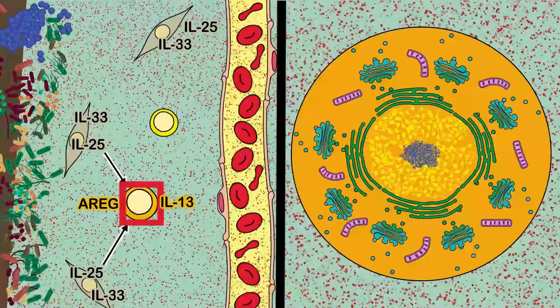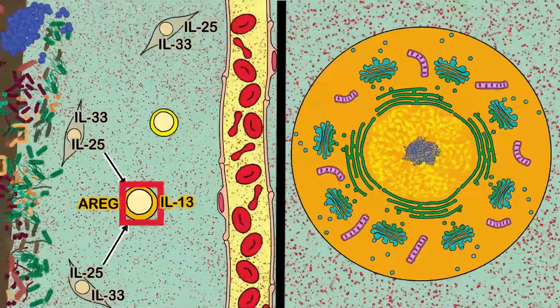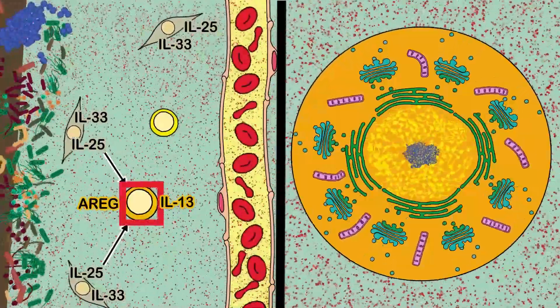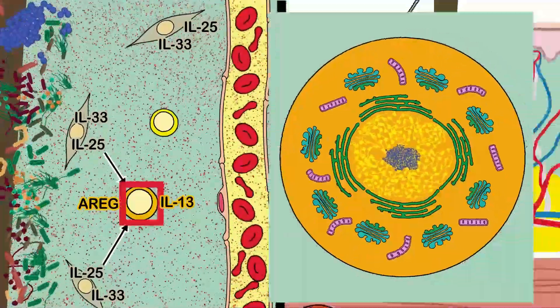ILCs specialize in the production of cytokines, so they naturally produce up to 1,000 times more than other cells, amplifying the inflammation process.